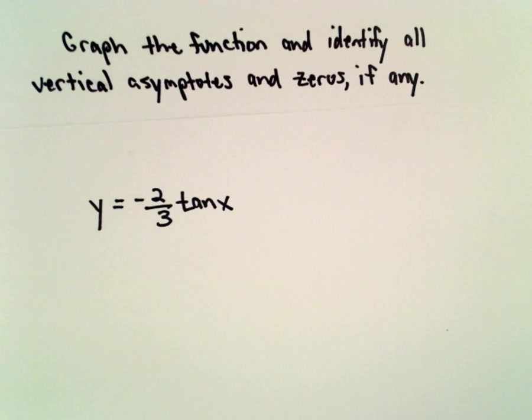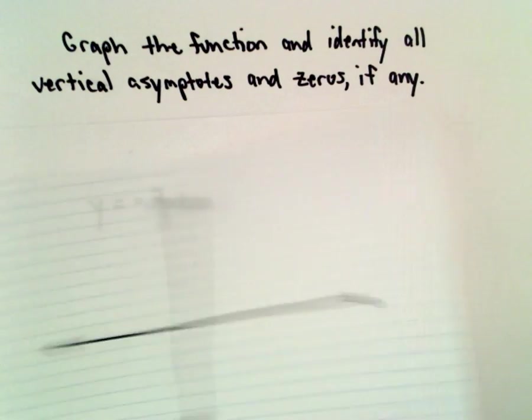Okay, here we're going to graph the function y equals negative two-thirds times tangent x. We'll pick out the vertical asymptotes and the zeros as well.